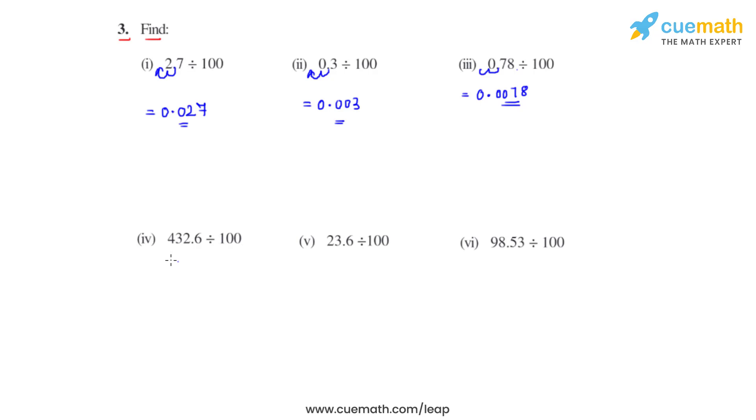Coming to the fourth bit, we have 432.6 divided by 100. Now the decimal moves two places towards right. So the answer for this bit is 4.326.